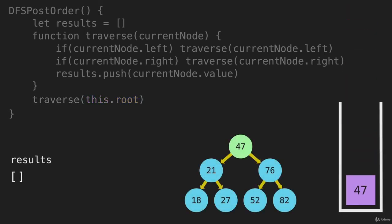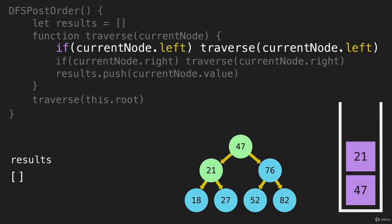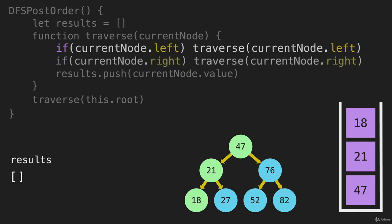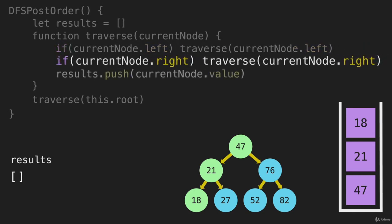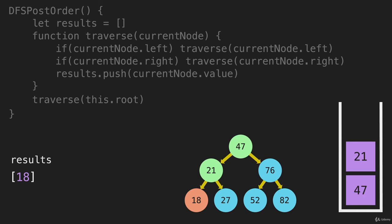So at the root, we're going to put 47 on there. The first thing we're going to do is say, is there a node on the left? And there is — we're going to go to the 21 node and push that onto the stack. Then 21 is going to say, is there something on the left? And there is, the 18. It's going to go left and add that onto the stack. So 18 is going to look left — there isn't anything there — and then look right, and then push its value into the array. That push is the last line of the function, which means we can pop 18 from the call stack.